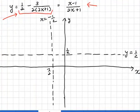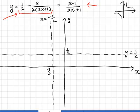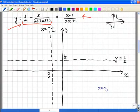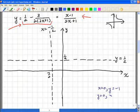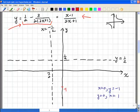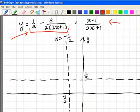Once we have established the two asymptotes, we need to determine how to draw the two branches of the graph. We find the intercepts: with the x-axis, let y equal to zero; with the y-axis, let x equal to zero. When x equals to zero, y equals to negative one. When y equals to zero, x equals to one. So the graph passes through the points (0, negative 1) and (1, 0).